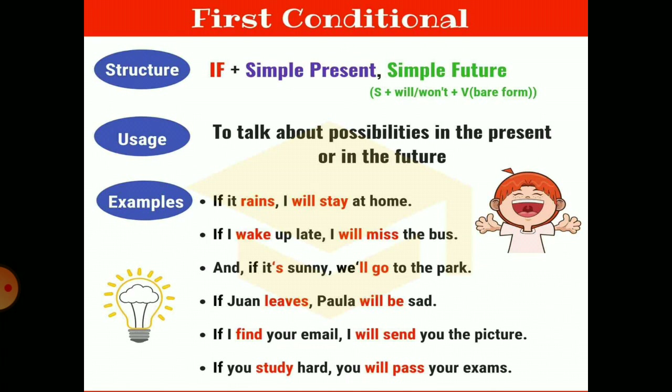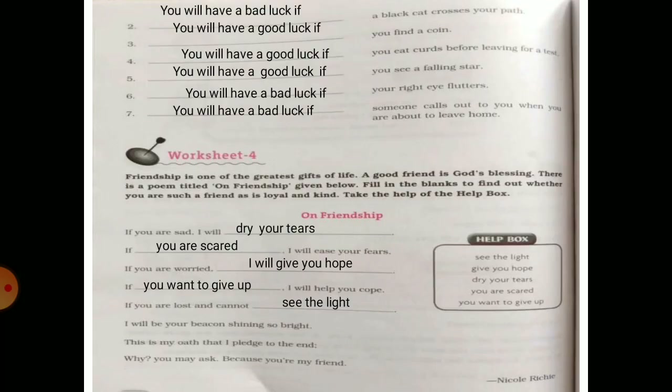Here are some superstitions found in every house. Like, if a black cat crosses your path, you will have bad luck. You will have good luck if you find a coin. You will have good luck if you eat curd before leaving for a test. You will have good luck if you see a falling star. You will have bad luck if your right eye flutters. You will have bad luck if someone calls out to you when you are about to leave home. These are just thoughts of the people.